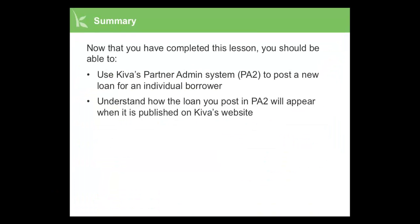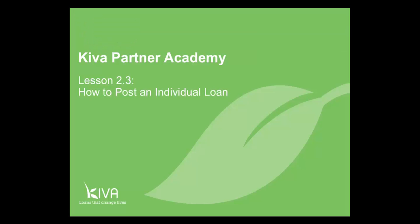Now that you have completed this lesson, you should be able to use Kiva's Partner Admin System, known as PA2, to post a new loan for an individual borrower, and understand how the loan you posted in PA2 will appear when it is published on Kiva's website. Thank you for completing this lesson of the Kiva Partner Academy. We hope to see you again soon!